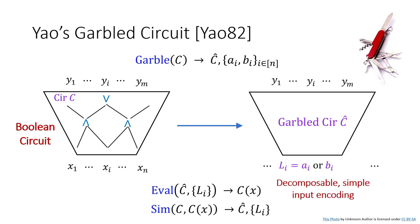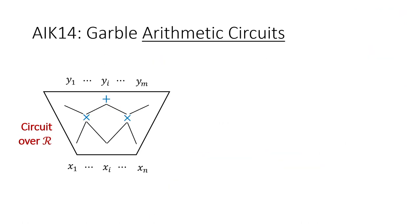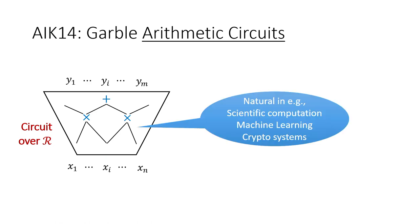We note two features of the input encoding. First, it's decomposable, meaning that labels Li are each computed from an input bit Xi separately. Second, the labels have a short dimension that's independent of the circuit size C.